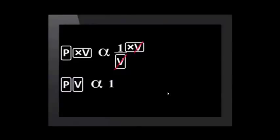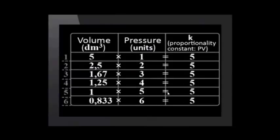This simplifies like this. PV is directly proportional to 1. This does not mean that any P times its associated V equals 1. We've already seen that for this particular situation, PV equals 5, not 1.